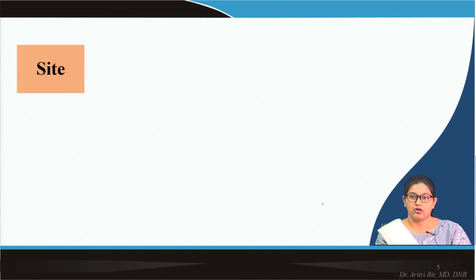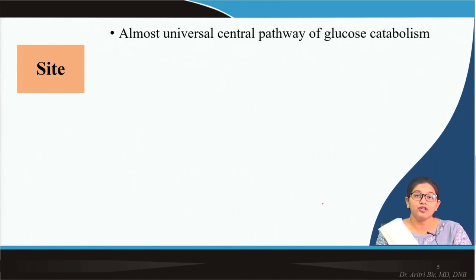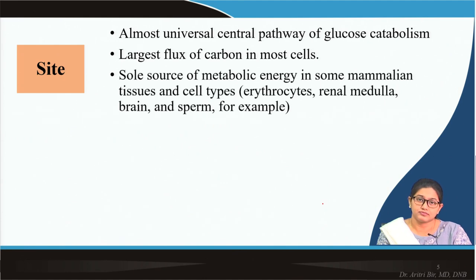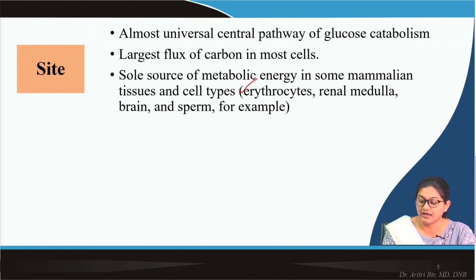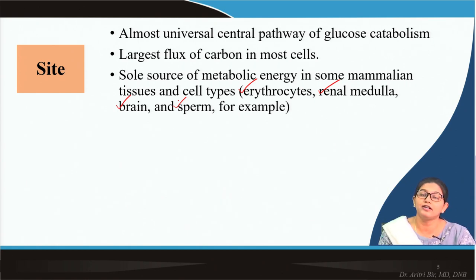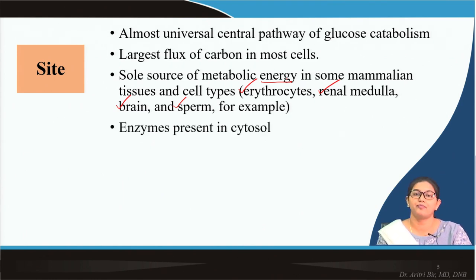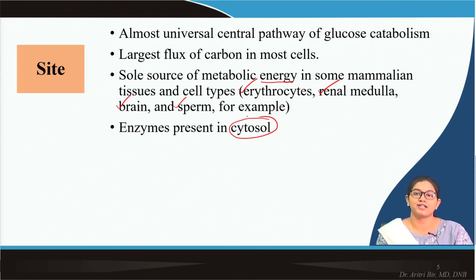Where does glycolysis occur? Glycolysis is essentially a universal, central pathway of glucose metabolism present in almost every cell, and it represents the largest flux of carbon. Multiple tissues such as erythrocytes (RBCs), renal medulla, brain, and sperm cells are solely dependent on glycolysis for their energy supply. The enzymes required for glycolysis are present in the cytosol, so glycolysis is a cytosolic metabolic pathway.